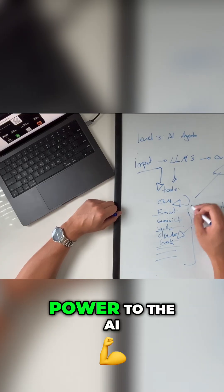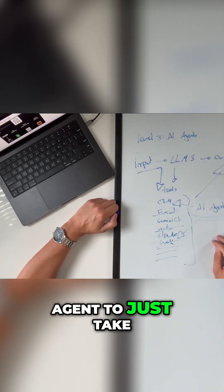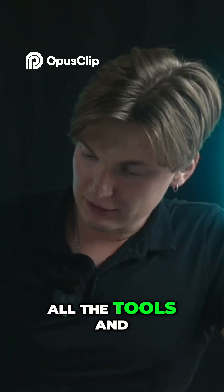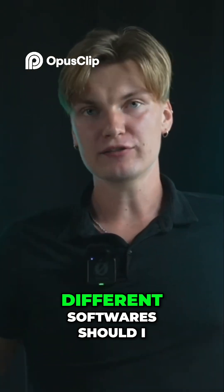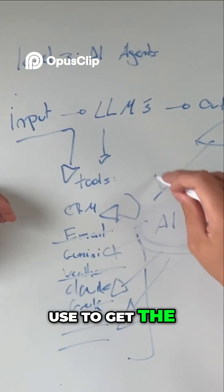You just give the power to the AI agent to take decisions by itself. You will give them all the tools and the AI agent is going to decide what different softwares should I use to get the best output.